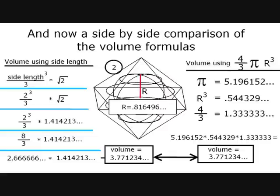On the right you'll see the parts of the 4 third pi r cubed formula I covered earlier, where pi is substituted with the triangle constant 5.196, because the octahedron is made up of triangles. The inscribed radius, .816 cubed, which comes out to be .544, and the secondary constant 4 thirds, which is 1.33 repeating. If you multiply them all out, the result is 3.771234, identical to the other formula.